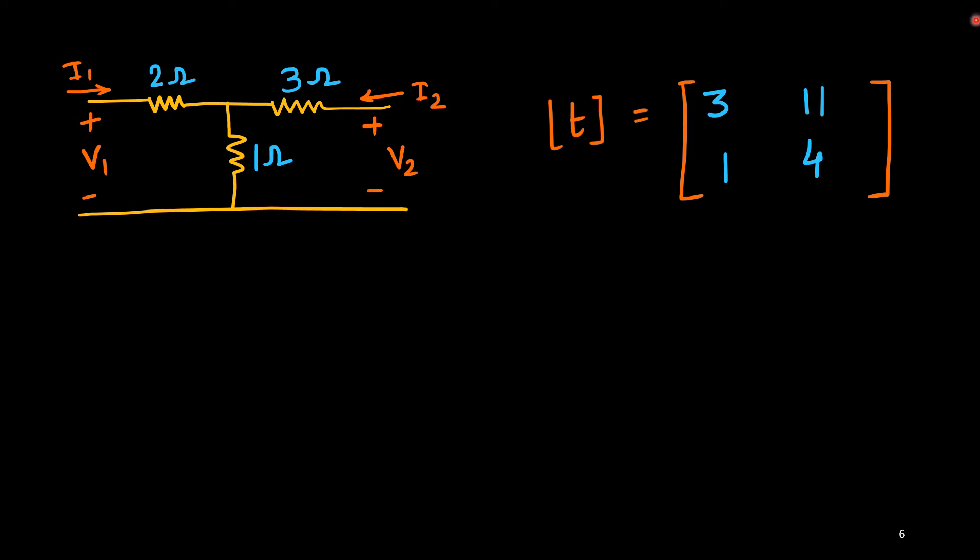Let us see. Now I want to get the same result, this T parameter for this T network using cascading property. So, what we will do, this is suppose one small network, and next network is suppose this one, a single element network, and next one is suppose this one. This three different networks they are cascaded we can think. Then what would be your equivalent T? For this network, you see what I have said.